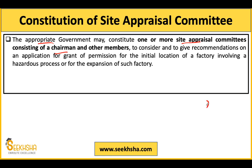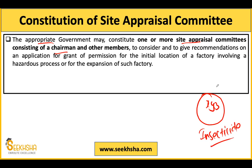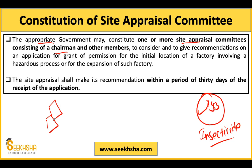The Site Appraisal Committee's role: if I want to set up a factory today — for example, an insecticide manufacturing factory at a particular location — I will prepare a file stating the location and purpose, and submit it to the Site Appraisal Committee. The committee will decide whether I can set up the factory there or not. Even in the case of expanding an existing factory, I need to obtain permission from this Appraisal Committee.